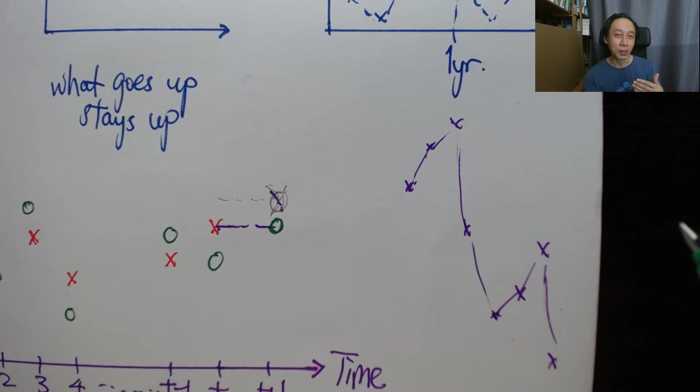The best approximation to the immediate future for a very unpredictable future is the immediate past. If you use a lot of past data, then it doesn't tell you the real story. The closest to the immediate future is the immediate past.